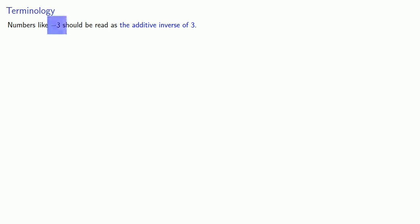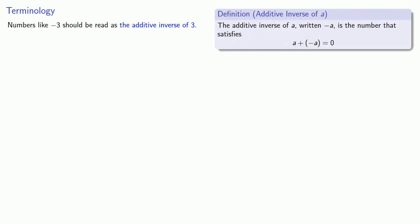Numbers like -3 should be read as the additive inverse of 3 because this reminds us of the most important fact about this number. When you add it to 3 you get 0. However, because it is something of a bother to say the additive inverse of 3 every time we read this number, it is usually read as negative 3.